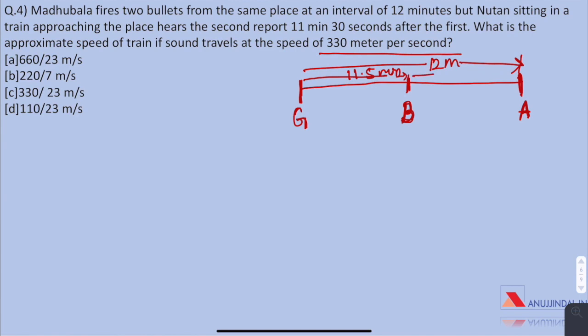So it means that it takes 30 seconds for the sound of gunshot to travel from point B to point A and similarly, the train takes 11.5 minutes to travel from A to B. Let us assume this distance is D. It is same for both the sound and the train.